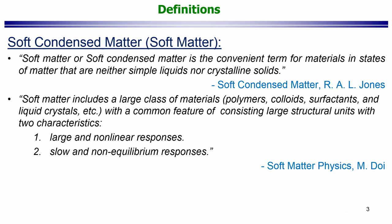In another book called Soft Matter Physics by author Masao Doi, he states that soft matter includes a large class of materials, and then he goes on to enumerate some of the possible materials: polymers, colloids, surfactants, liquid crystals, etc., with the common feature of consisting of large structural units with two characteristics: large and non-linear responses, slow and non-equilibrium responses. The first part of this definition is still appealing to intuition in the sense that it is trying to enumerate some of the possible soft materials that are out there. Then it gives you two important characteristics of them. These characteristics come from a statistical mechanics or microscopic viewpoint. We will take this up later on in the course.